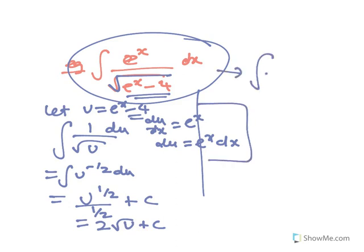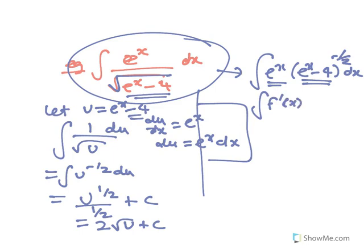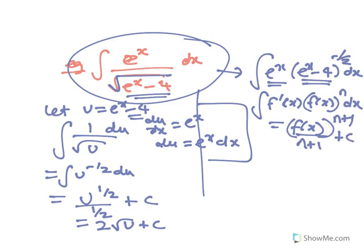Okay, so the other way you could look at this is the reverse chain rule, because you can see that when you bring that up, it is the power of minus 1 half, not 1. And the derivative of the e to the x minus 4 is just e to the x. So it's set up in this form of f dash x, f of x to the power of n dx. So that just ends up being f of x, n plus 1 on n plus 1 plus c.